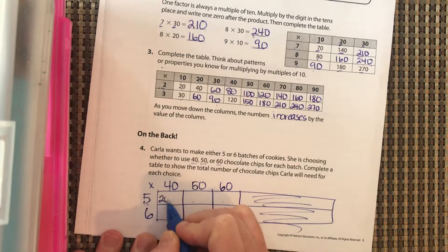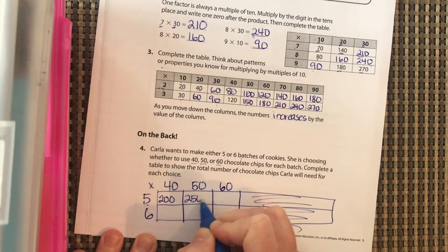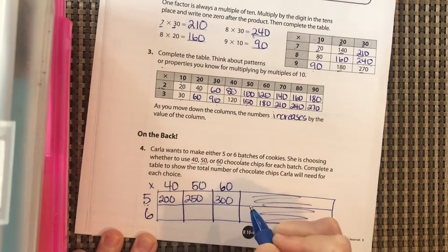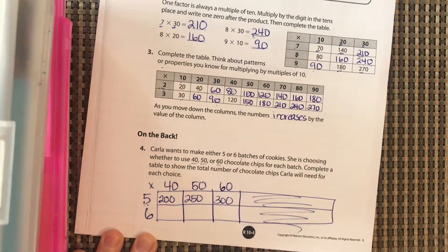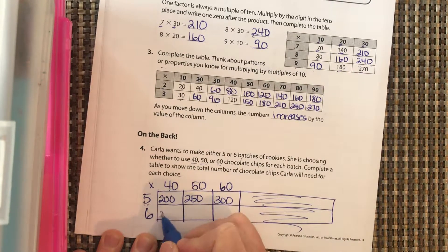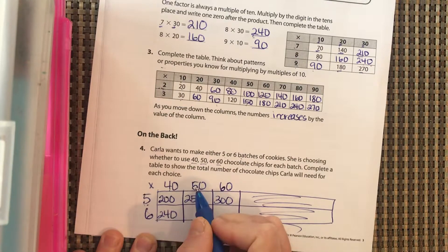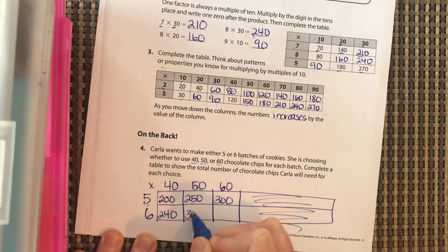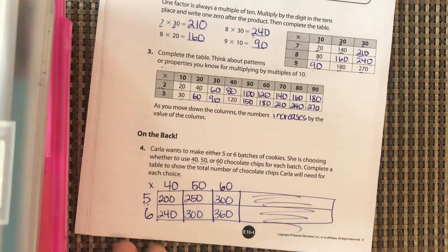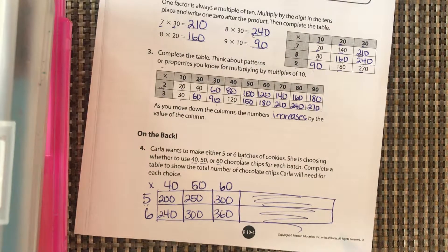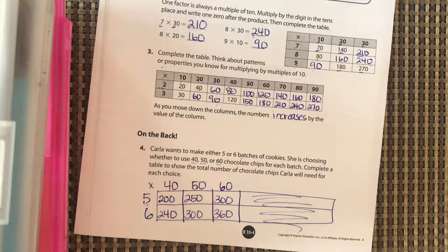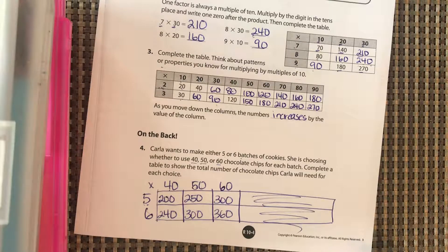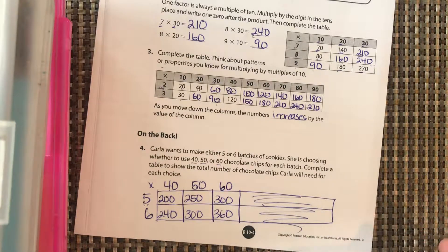Okay, you should get 200, 250, 300, 240, 300, and 360. So that's going to tell you how many chocolate chips you would need. That's going to tell us how many chocolate chips she's going to need. Okay, good job.